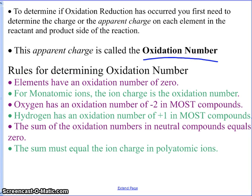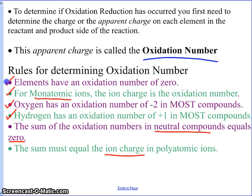The first rule is that elements have an oxidation number of zero — any element has an equal number of protons and electrons. Second rule: if you have a monatomic ion, the charge on the ion is its oxidation number. Third rule: the oxidation number of oxygen is minus two in most compounds, and for hydrogen the oxidation number is plus one. The sum of the oxidation numbers for neutral compounds equals zero, and for ions it equals the charge on the polyatomic ion.